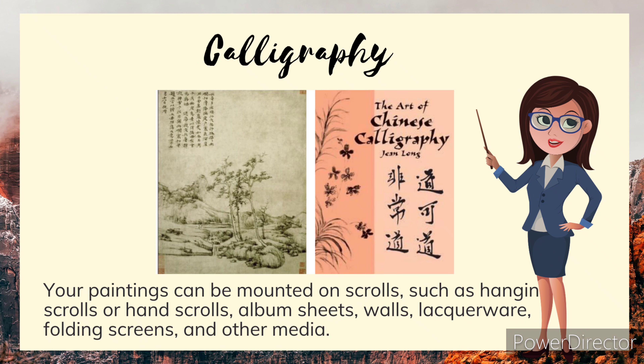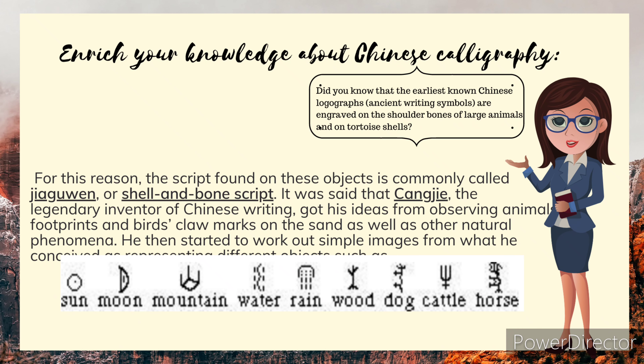The popular materials which paintings are made of are paper and silk. Poets write their calligraphy on their paintings. Paintings can be mounted on scrolls such as hanging scrolls or hand scrolls, album sheets, walls, lacquerware, folding screens, and other media. The earliest known Chinese logographs — ancient writing symbols — are engraved on the shoulder bones of large animals and on tortoise shells. For this reason, the script found on these objects is commonly called oracle bone script or shell and bone script. It is said that Cang Jie, the legendary inventor of Chinese writing, got his ideas from observing animals' footprints and birds' claw marks on the sand, as well as other natural phenomena.